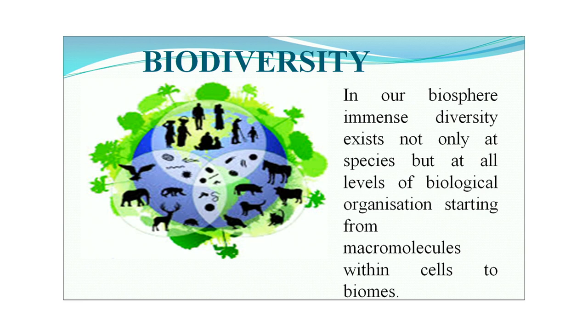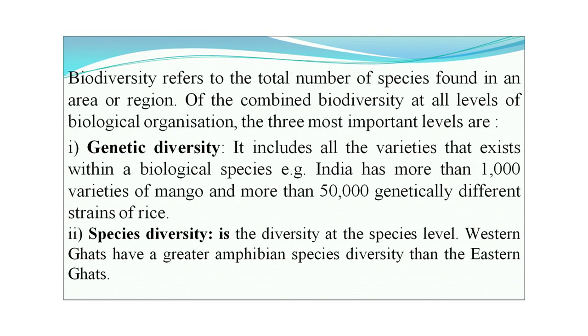Our next topic is biodiversity. In our biosphere, immense diversity exists not only at the species level but at all levels of biological organization, from macromolecules within cells to biomes. Biodiversity refers to the total number of species found in any particular area or region — the combined biodiversity at all levels of biological organization. The three most important levels are genetic, species, and ecological levels. Genetic diversity includes all the varieties that exist within a biological species.